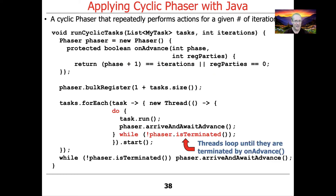So we iterate iterations number of times, controlled by the do-while loop. We keep looping until the phaser is terminated — as long as the phaser is not terminated, we keep looping around and calling run again. Things will keep looping until onAdvance decides we've reached the end of the processing.